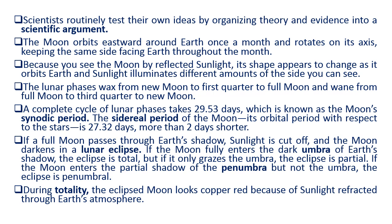The lunar phases wax from new moon to first quarter to full moon, and wane from full moon to third quarter to new moon. A complete cycle of lunar phases takes 29.53 days, which is known as the moon's synodic period. The sidereal period of the moon — its orbital period with respect to the stars — is 27.32 days, more than two days shorter.